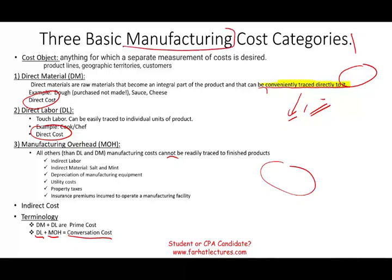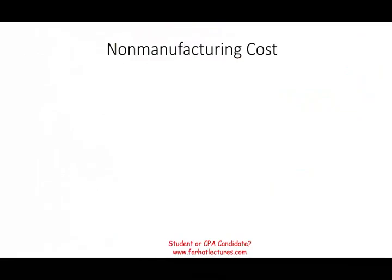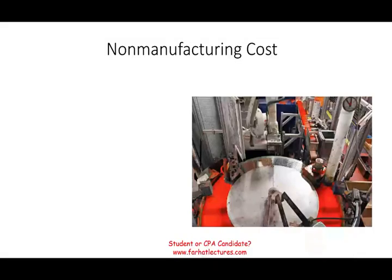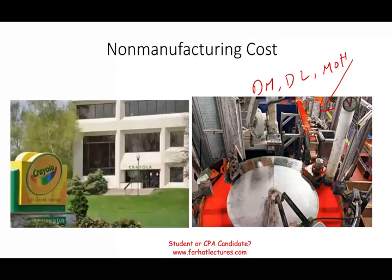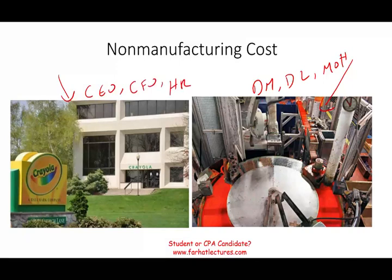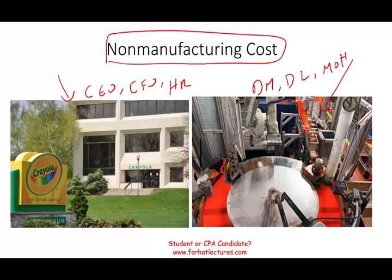We've talked about the three basic manufacturing costs. We also need to understand that there are non-manufacturing costs. It's important to distinguish between these concepts. Manufacturing costs are costs incurred in the actual manufacturing or production facility. For example, this picture is for Crayola, where they make the crayons — this is where direct material, direct labor, and manufacturing overhead takes place. Crayola also has their own headquarters, where the CEO's office, CFO's office, HR, accounting, payroll, and administrative and support functions are. That is non-manufacturing cost — it is part of the overall cost, but not part of manufacturing cost.